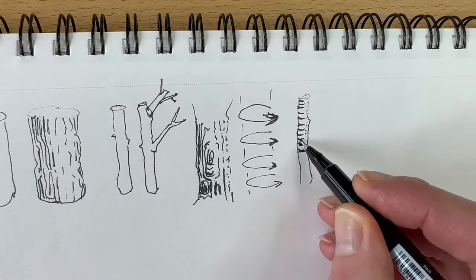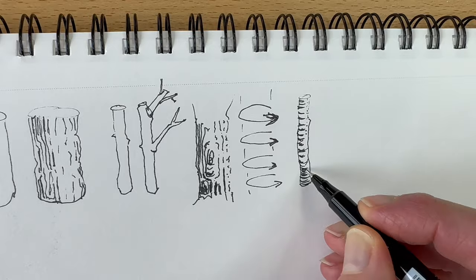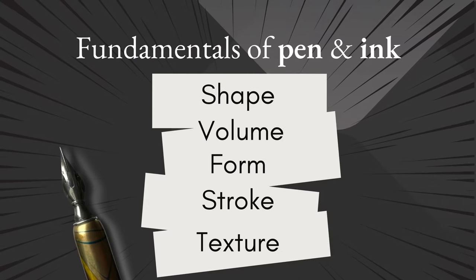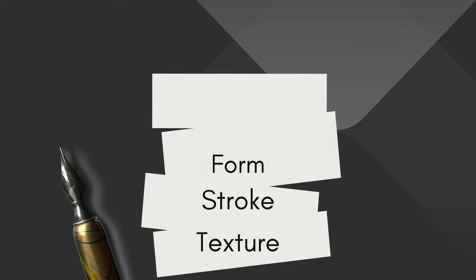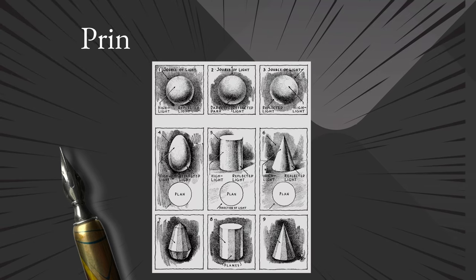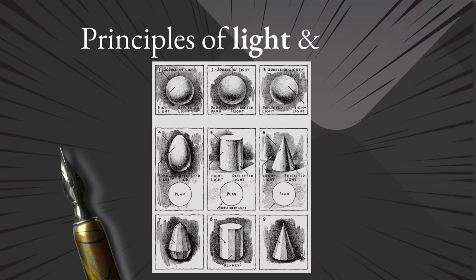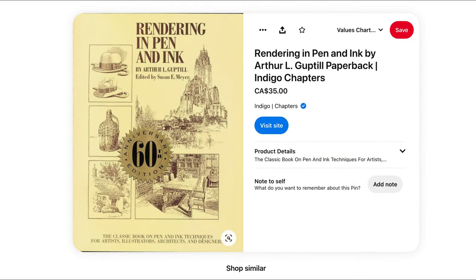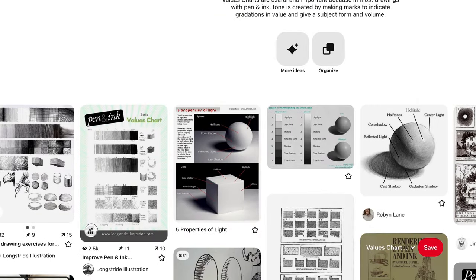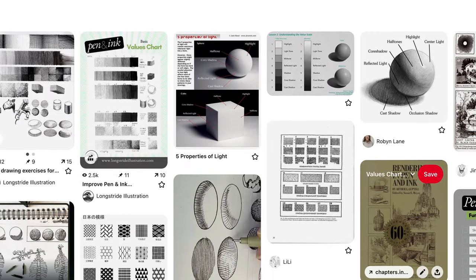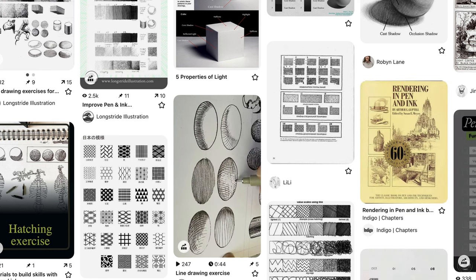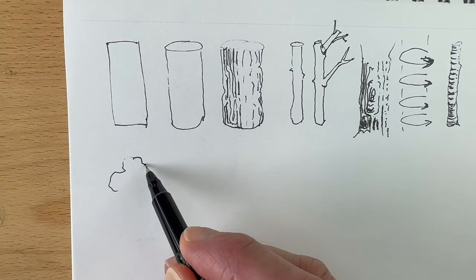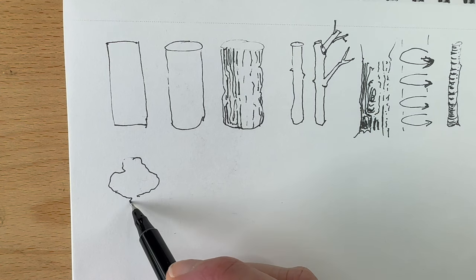That's the formula for our technique here: shape, volume, form, stroke direction, and texture. Those are the key pen and ink fundamentals. I often refer to a particular chart for guidance that you can find in this author's book, and I also made a Pinterest board of values charts — you'll find links in the description. Let's keep practicing by applying our formula to other elements.